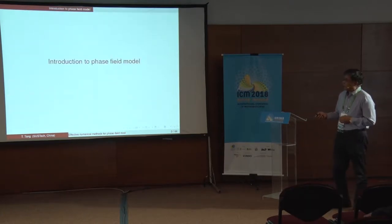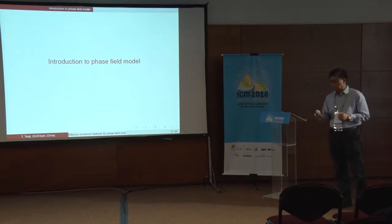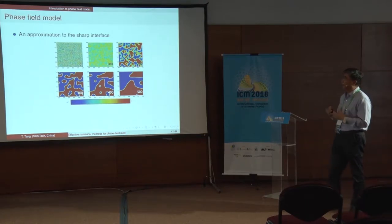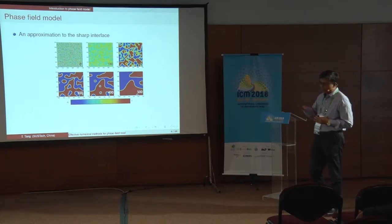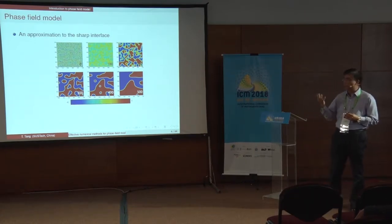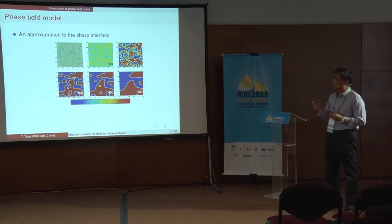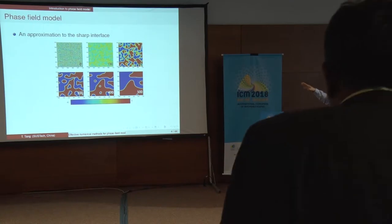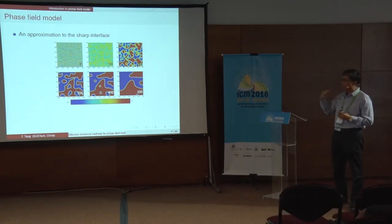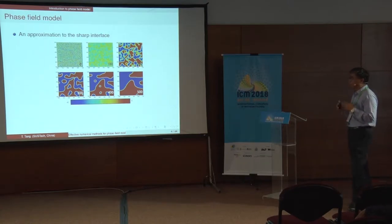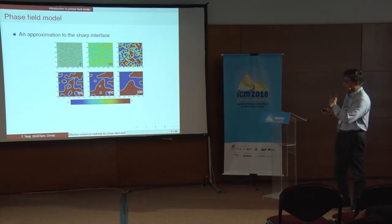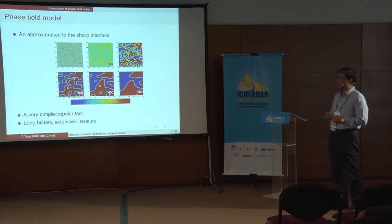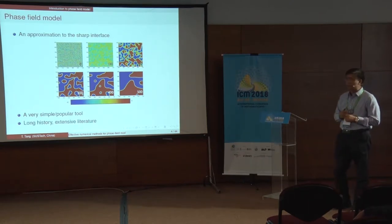Phase field models are basically an approximation to describe sharp interfaces. For many problems, you start with random data, and with phase field models, after some time you have a coarsening procedure. At almost steady state, you see very sharp interfaces with clear pictures of the separations. This is a very simple and popular model with a long history and a lot of intensive research literature.